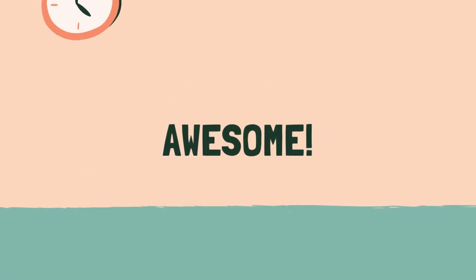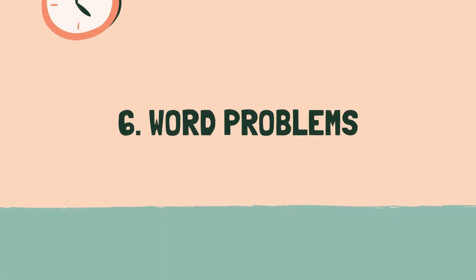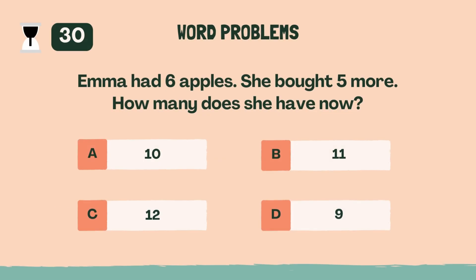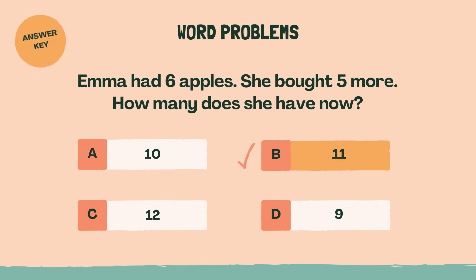Awesome! Last category coming up. Category 6: Word Problems. 3, 2, 1, go! Emma had 6 apples. She bought 5 more. How many does she have now? B, 11.